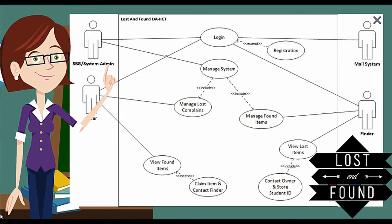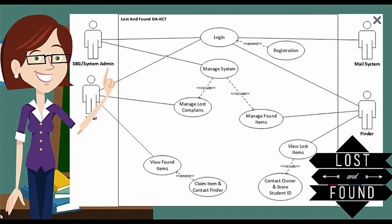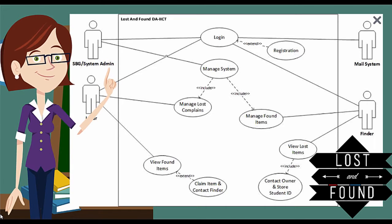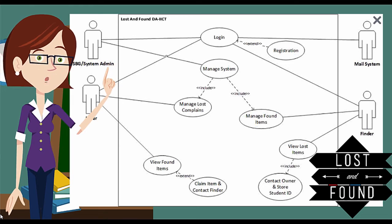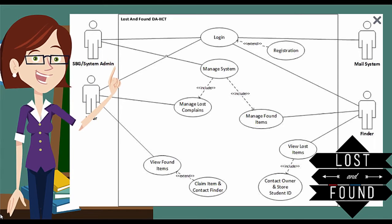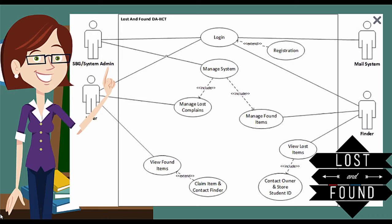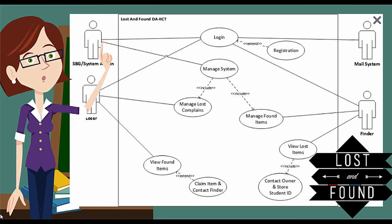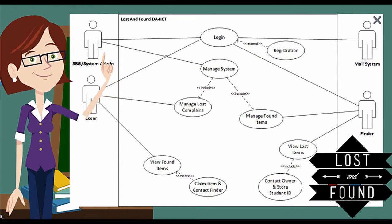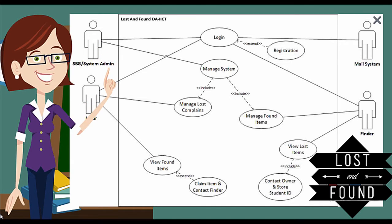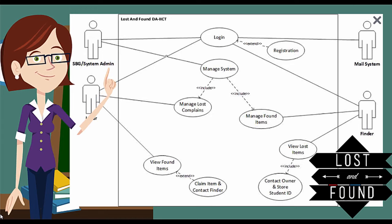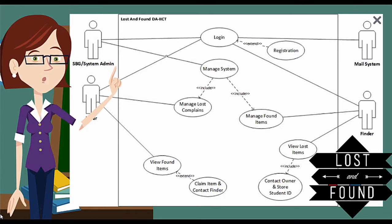View lost items — the finder communicates with the view lost items use case. If I found somebody's item and didn't receive any claim for it, I want to give it back to the rightful person, so I view the lost items. This includes contacting the owner and storing the student ID. Once I give the item back, it's my responsibility to add the student ID of that person for easy verification in the future.